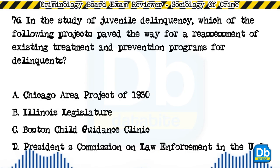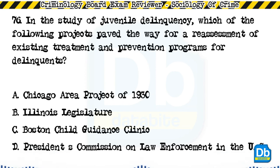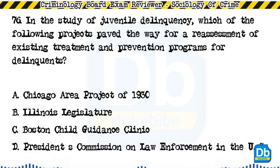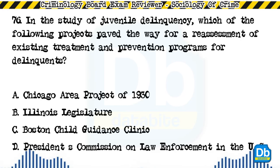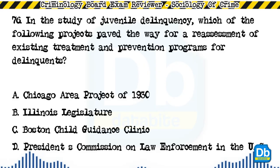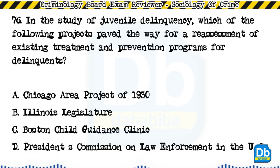Question 76: In the study of juvenile delinquency, which of the following projects paved the way for a reassessment of existing treatment and prevention programs for delinquents? a) Chicago Area Project of 1930, b) Illinois legislature, c) Boston Child Guidance Clinic, d) President's Commission on Law Enforcement in the US. The answer is A, Chicago Area Project of 1930.